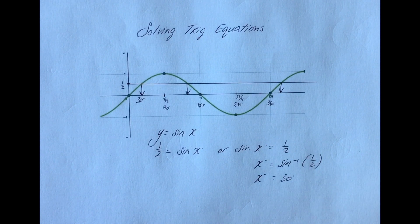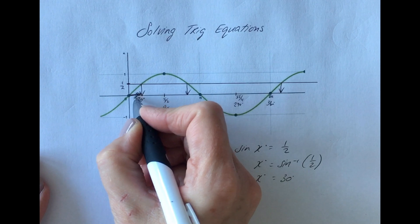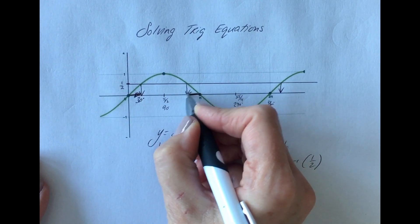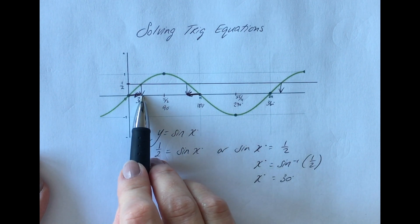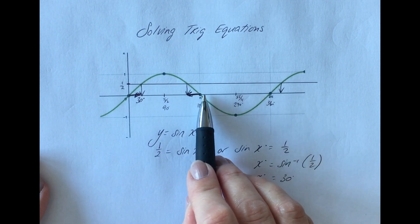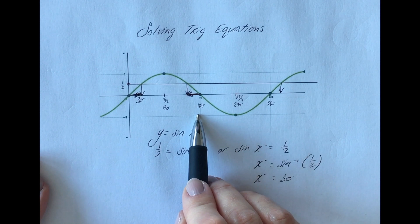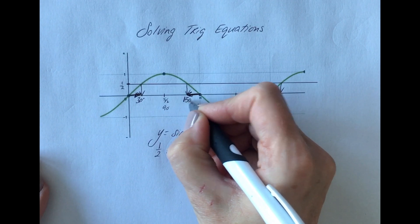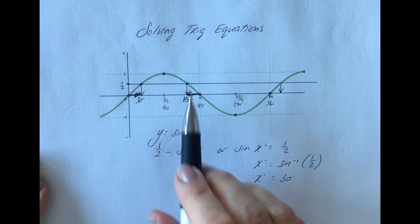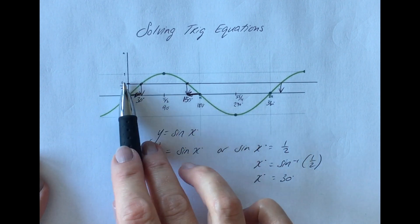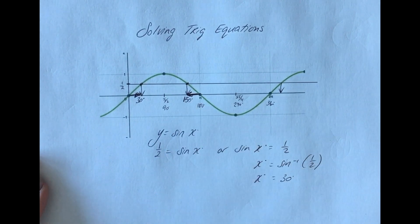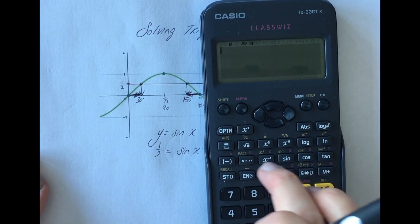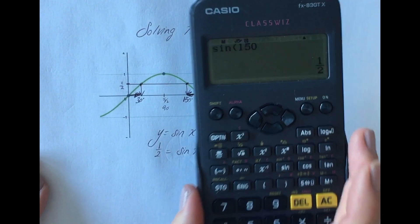The good news is, with your trig graphs, there's always a kind of symmetry or equal spacing going on. So if I know there's a gap of 30 degrees here, there's going to be a gap of 30 degrees here. If that's 30 degrees, and I know it cuts the x-axis at 180 degrees, and that gap is 30 degrees, then that value where sine x equals a half must be 150. You can always double-check: sine 150 equals a half, and of course it does.